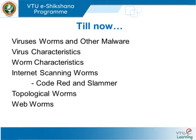As I told you, we have talked about viruses, worms and other malware — their characteristics and the differentiation between them. We also talked about internet-scanning worms, specifically Code Red and Slammer, which are two famous worms that caused widespread problems on the internet. We also covered topological worms and web worms.